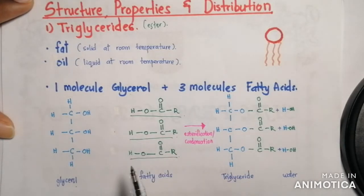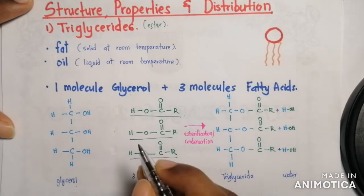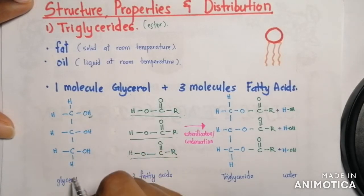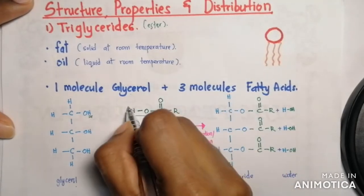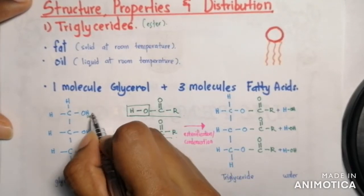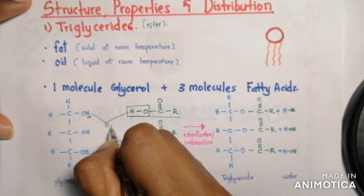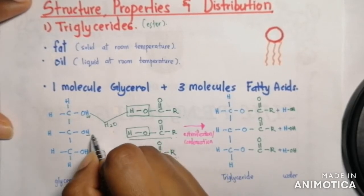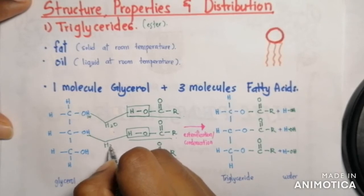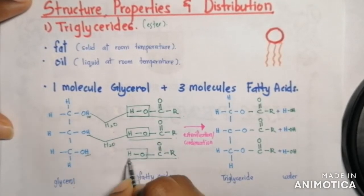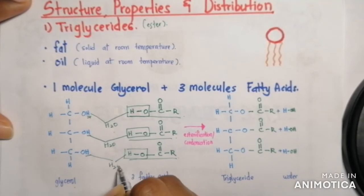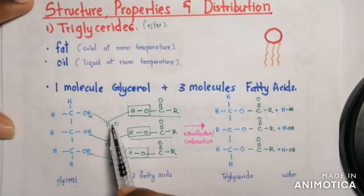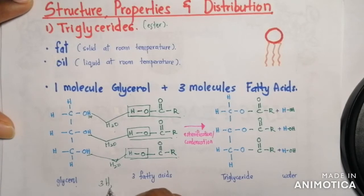To form an ester, the H from the hydroxyl group of the alcohol is removed and the OH from the carboxyl group of the fatty acid is removed, forming water. This happens three times — once for each fatty acid. So glycerol plus three fatty acids gives three molecules of water (3H₂O).